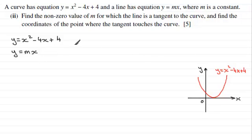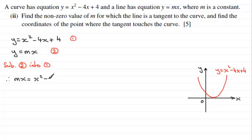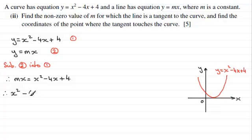Let's number our equations one and two. I'm going to substitute equation two into equation one. If we do that we get mx equals x squared minus 4x plus 4. We need to rearrange this into the form ax squared plus bx plus c equals zero. We have x squared, then taking mx from both sides gives minus 4x minus mx, which I'll group as minus (4 plus m)x, plus 4 equals zero.